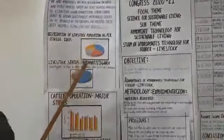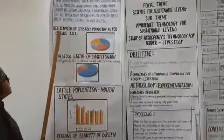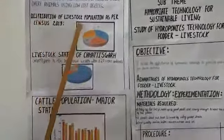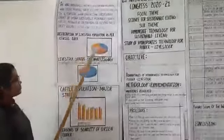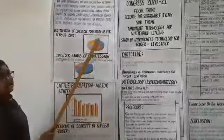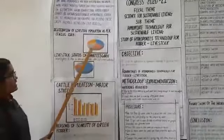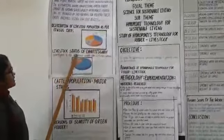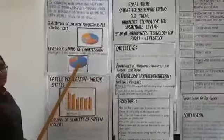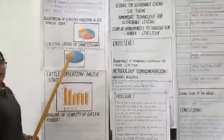I started my project with collecting data as distribution of livestock for the Census of 2019. According to this pie chart, cattle has the maximum percentage. Also in livestock status of Chhattisgarh, cattle has the maximum percentage of 64%.